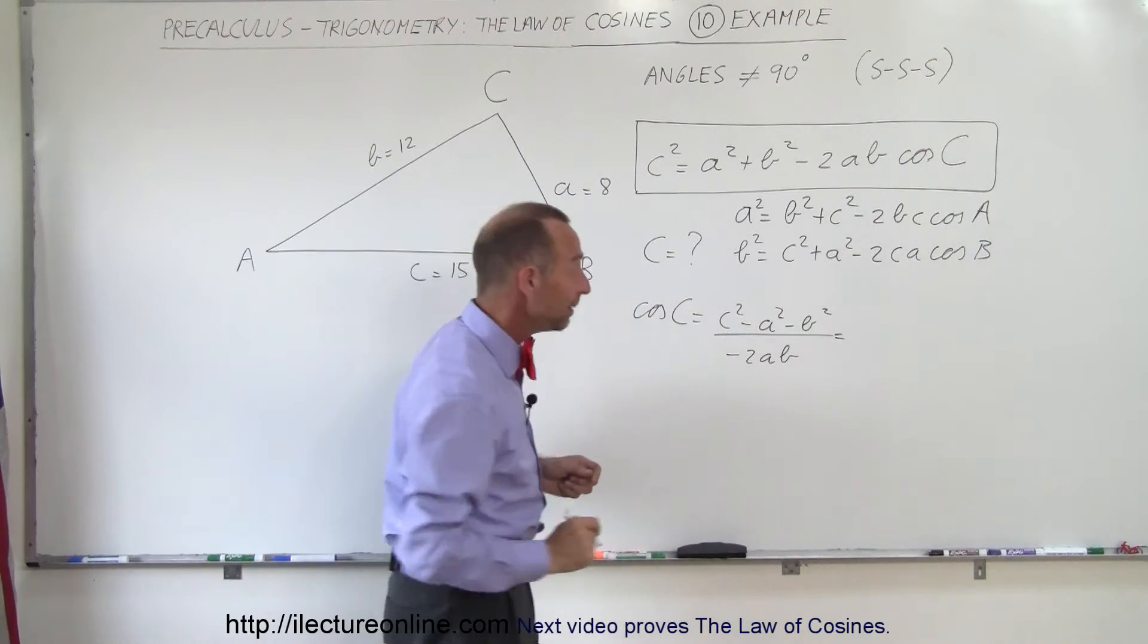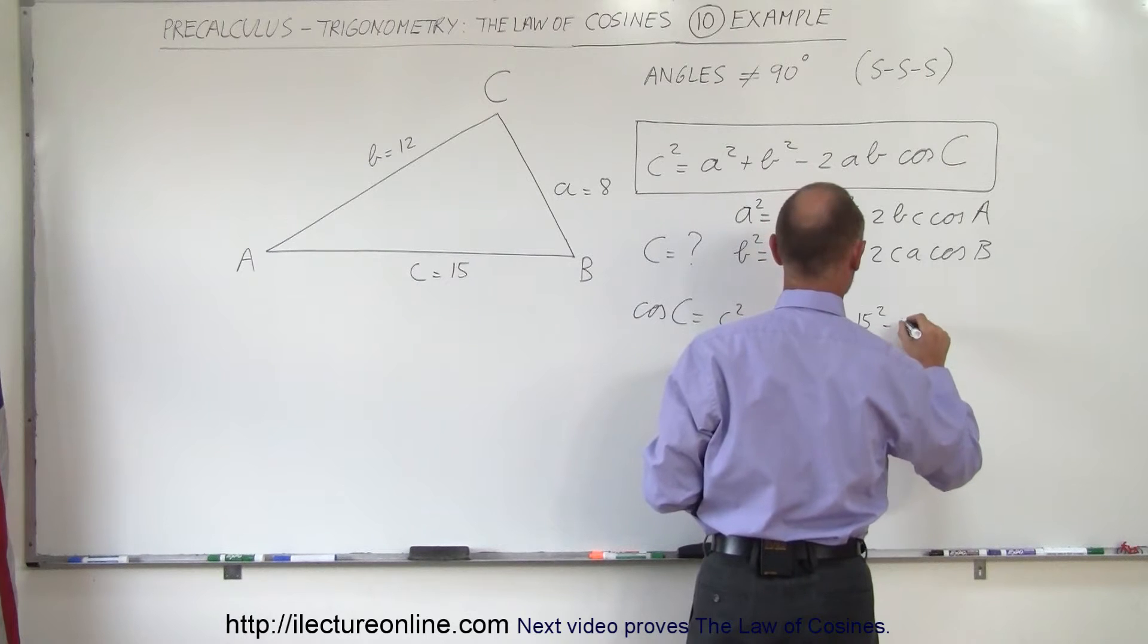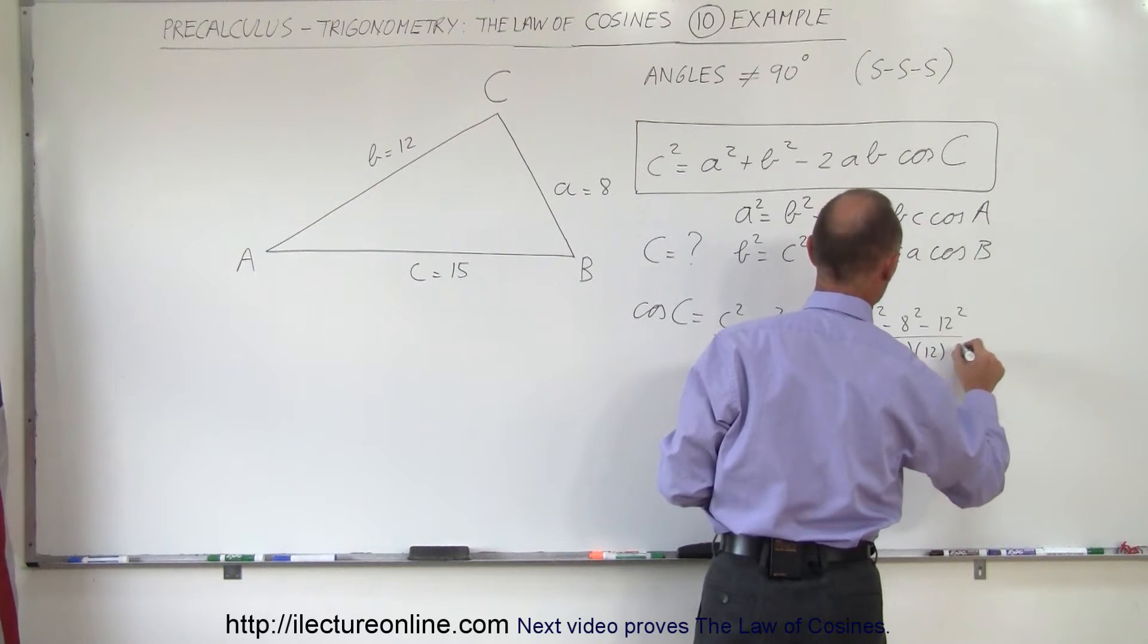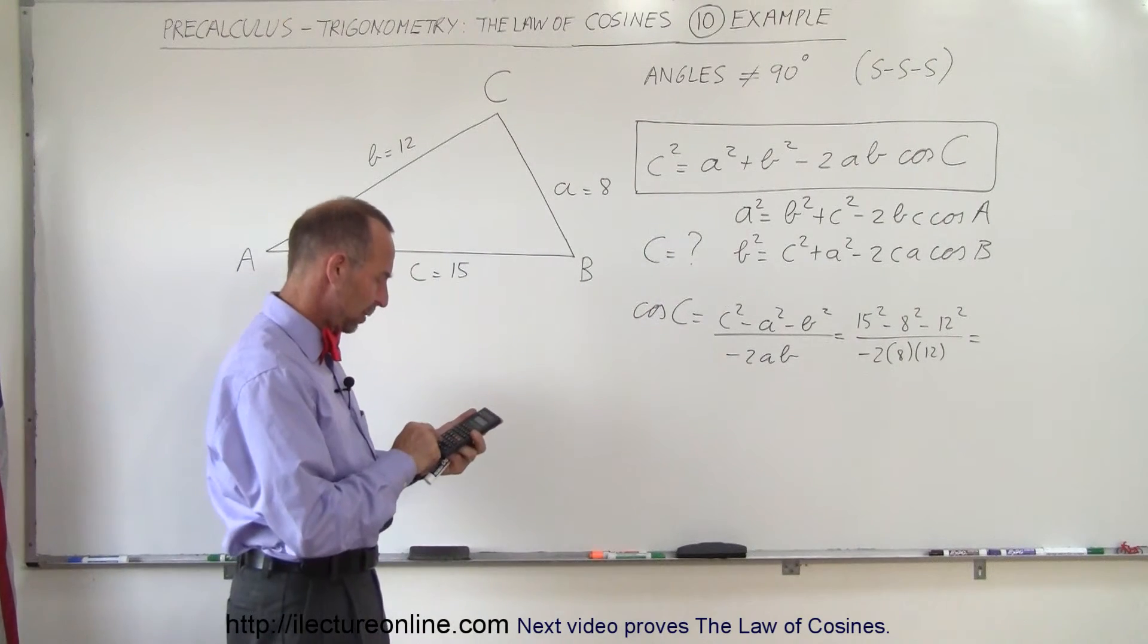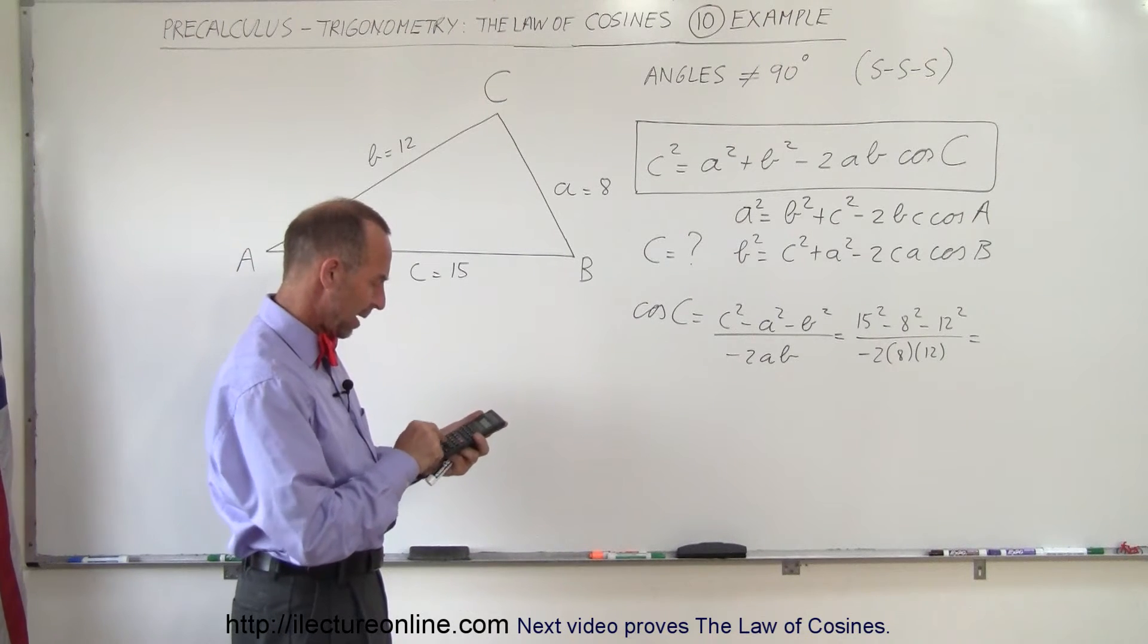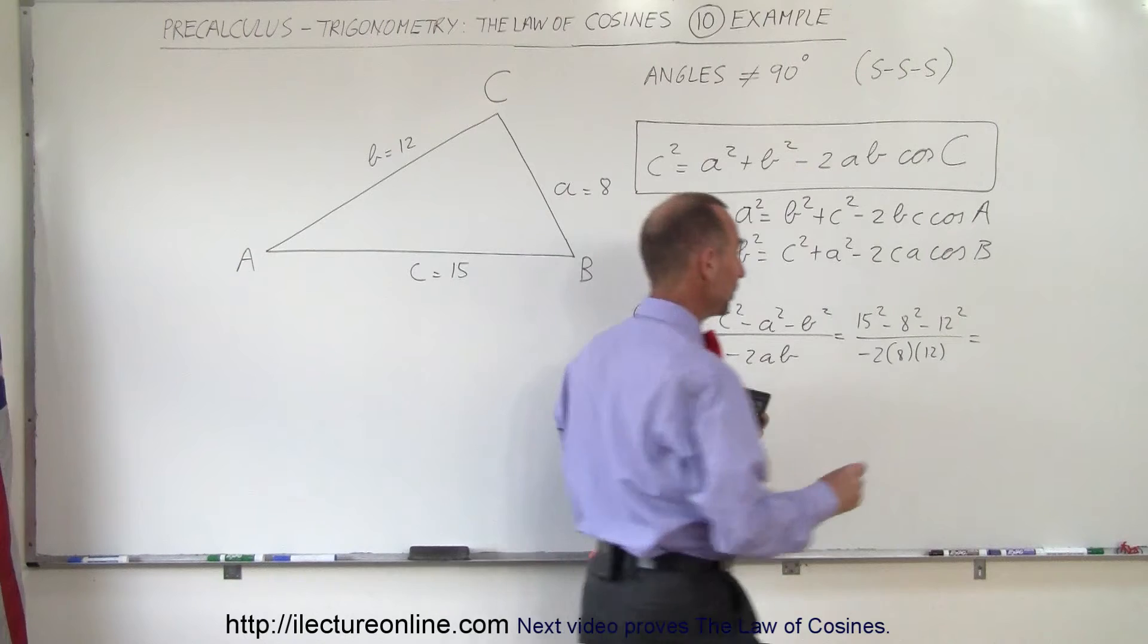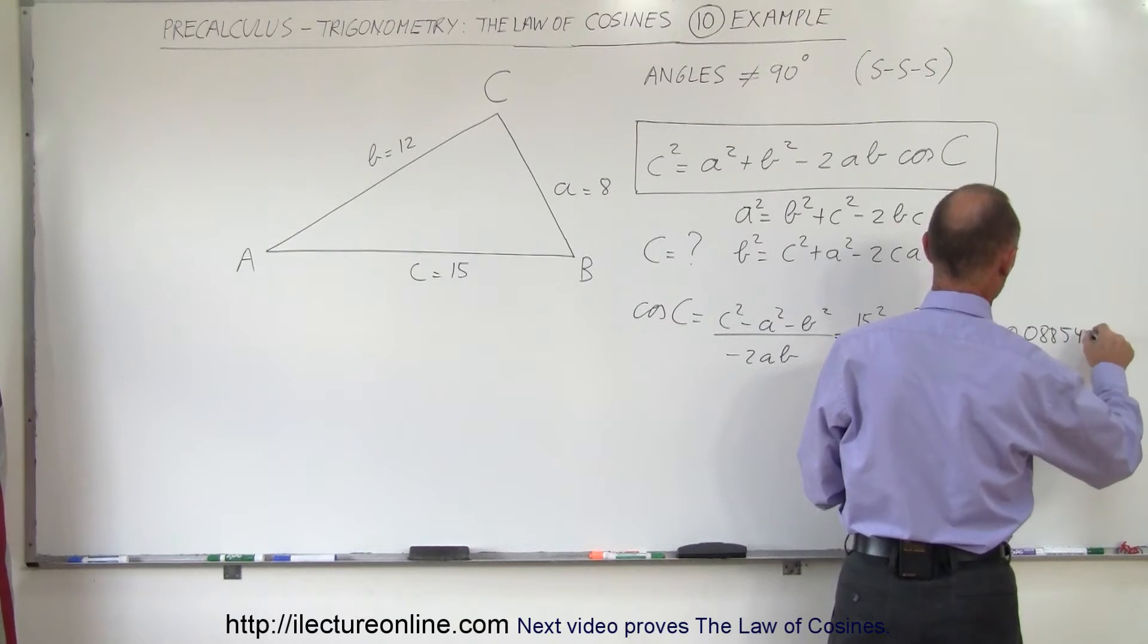Plug in numbers, let's see what we get. C is 15, so we get 15 squared minus A, that's 8 squared, minus B, which is 12 squared, all divided by minus 2 times A, which is 8, times B, which is 12. So 225 minus 64 minus 144 divided by negative 2 divided by 8 and divided by 12. What we get here is minus 0.088542.